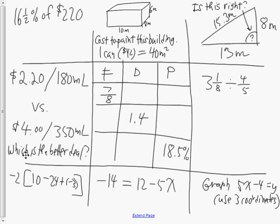Okay, grade eight, this is your homework for Wednesday night, March 7th. You have 18 questions that reach back to things you've already learned this year. The first question of nine says 16 and a half percent of 220.